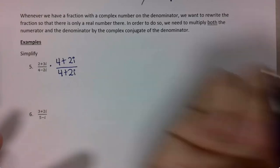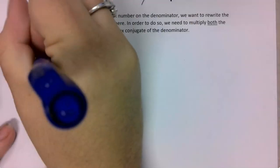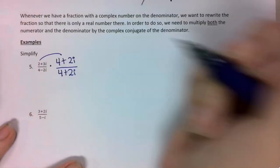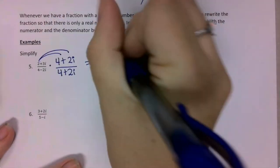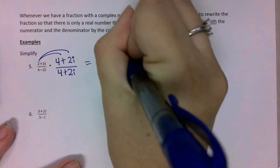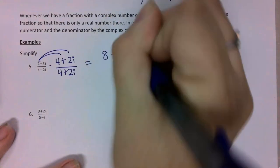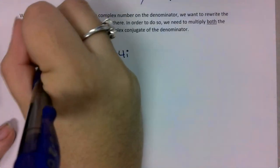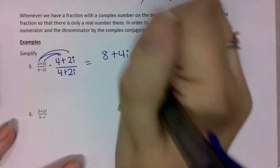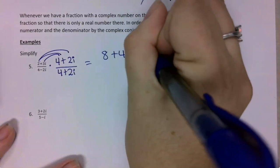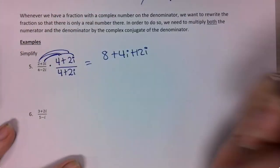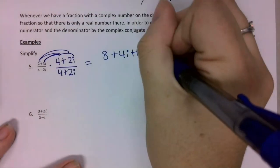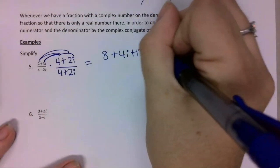I want to go ahead and distribute. So 2 times 4 is 8, 2 times 2i is 4i, 3i times 4 is 12i, and 3i times 2i is 6i squared.